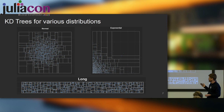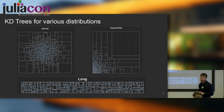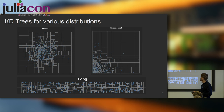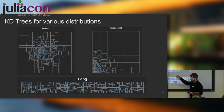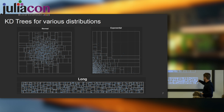Looking at how KD trees look for various distributions: for a normal distribution, points are more concentrated at the center, so the edges have large areas while the center is cut more finely. For an exponential distribution with more points toward low values, we have large boxes on one side and very small ones on the other — unlike the binning case where one big box held all the points. If there's more spread in one dimension than another, we see more cuts in that dimension.